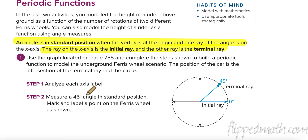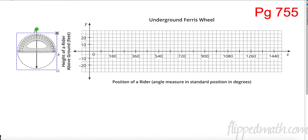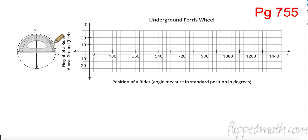On page 755 we're going to measure angles and plot them over time. Using a protractor — it's small, so bear with me — we plot points on the circle. At 30 degrees, here's our point. At 45 degrees, which is between 30 and 60, here's our point. At 60 degrees, here's our point. At 90 degrees, here's 90.